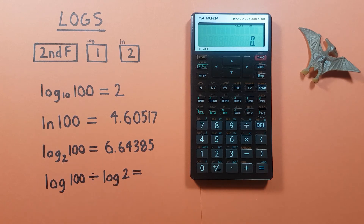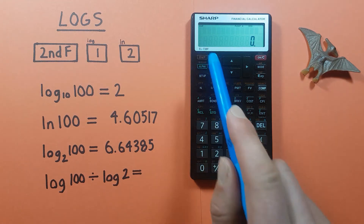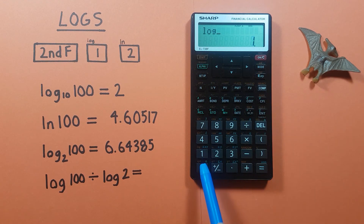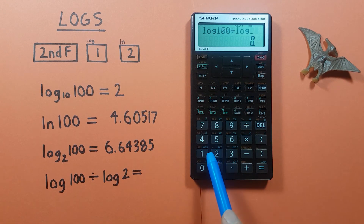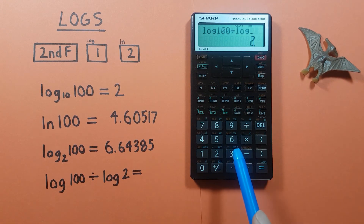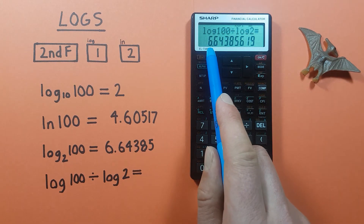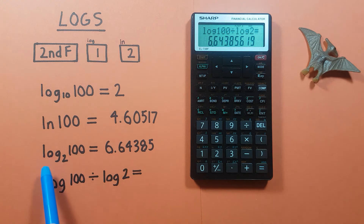So for our example, we would go log of 100 divided by log of 2. Press 2nd log, enter 100, divided by log of 2, then press equals. We get 6.6438, etc., which is log base 2 of 100.